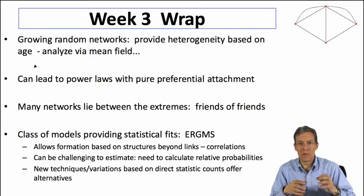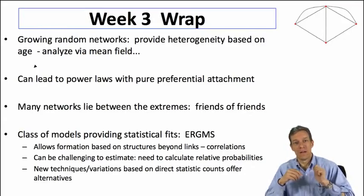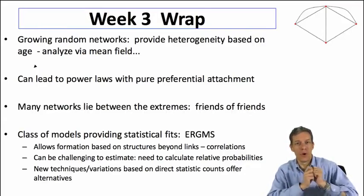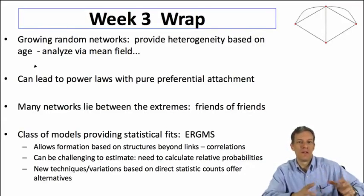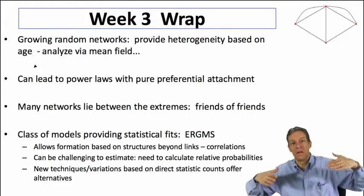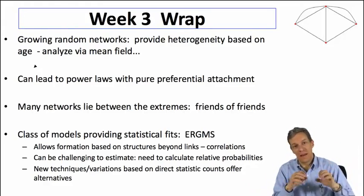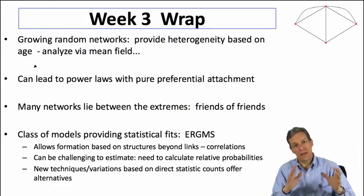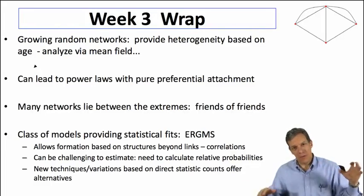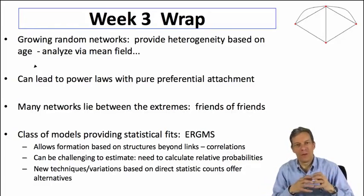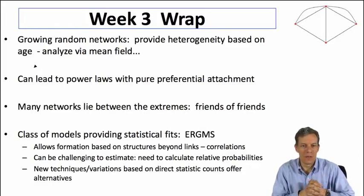if we went all the way to the extreme of preferential attachment — where when a node is born it wants to connect to better-connected nodes — then we got extreme versions of fat tails, power laws, and that begins to give us an idea of why we might end up with very fat tails in a degree distribution.